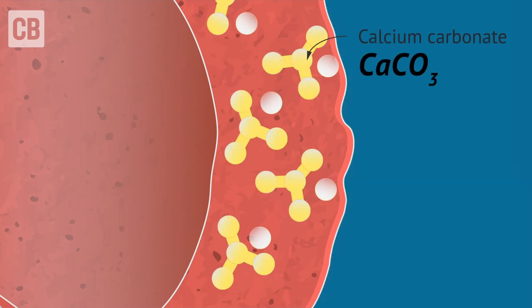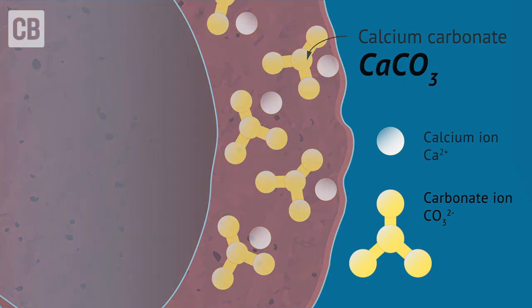Some types of coral have a hard outer skeleton made out of a compound called calcium carbonate. This compound is made of calcium ions and carbonate ions.